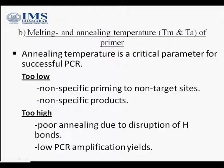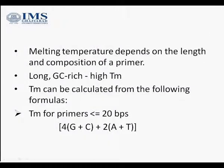Next is the melting and annealing temperature. The melting temperature is the temperature at which half of the DNA unwinds. The melting temperature of the two primers should not differ by more than 5 degrees Celsius. Too low a melting temperature can lead to non-specific binding, and too high a temperature can give poor results due to disruption of hydrogen bonds and poor annealing. So an optimum melting and annealing temperature is required, and it depends upon the length and composition of the primer — more GC content means stronger hydrogen bonding and a higher melting temperature.